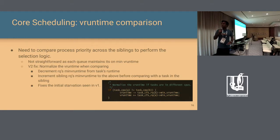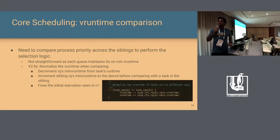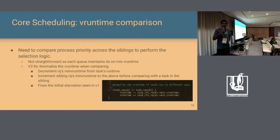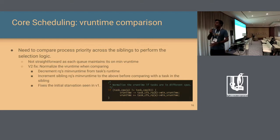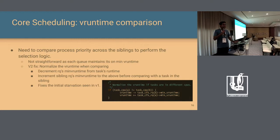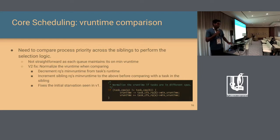The first fix for the vruntime issue uses the same logic that the current scheduler uses when migrating a process to a different run queue: decrement the min vruntime from the source run queue and add the destination run queue's min vruntime. This helped and fixed a couple of starvation cases, but it was still not perfect.